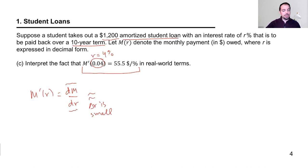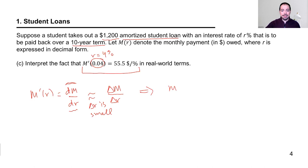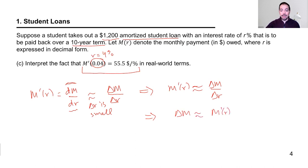When delta R is small, the infinitesimal dM is approximately the calculable change delta M, and dR is approximately delta R. So we learn that the derivative is approximately the average rate of change — something you probably learned early in your study of derivatives.